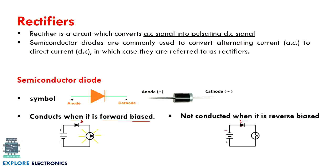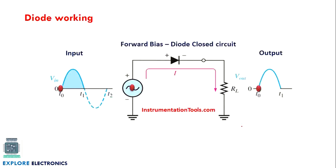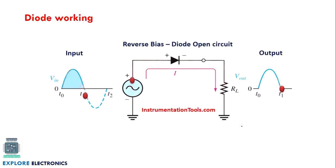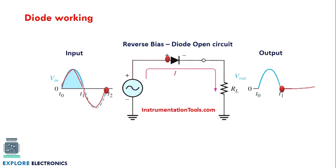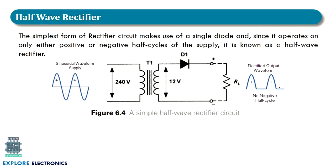When the diode is forward biased it conducts; when reverse biased it does not conduct. When we connect an AC signal, during the positive half cycle the diode is forward biased and conducts. During the negative half cycle the diode becomes reverse biased and gives zero output. As the positive half cycle comes the diode conducts, so we get the same kind of output on the positive half cycle as at the input.